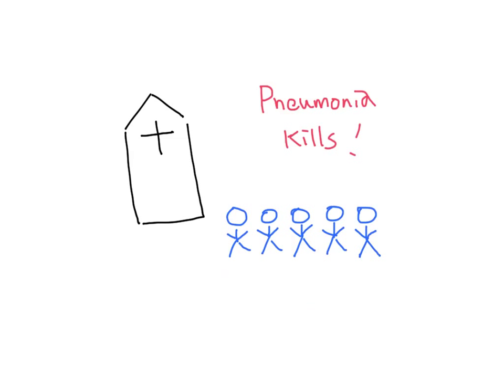We want to know about pneumonia because it kills. Out of all the patients who have pneumococcal pneumonia with bacteremia, the mortality rate is 1 in 5. The older the patient, the higher the mortality rate.